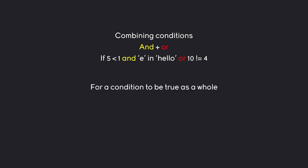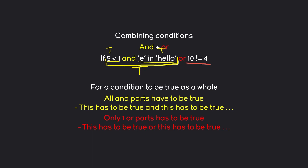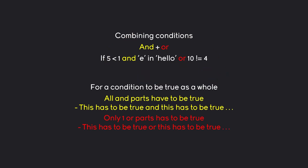To understand how this works we have to understand AND and OR. AND means that all the parts have to be true — both conditions, like '5 is more than 1' and 'E in hello', have to be true individually for the entire statement to return true. Whereas OR works in the opposite way where only one OR statement has to be true, so if that OR statement is true it doesn't matter if the rest is false.